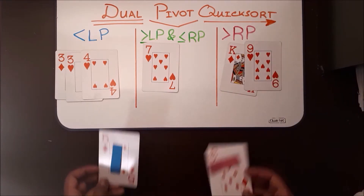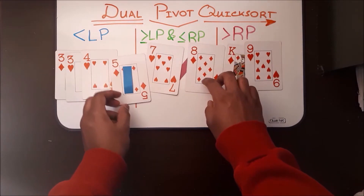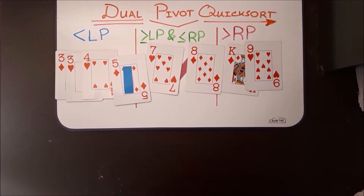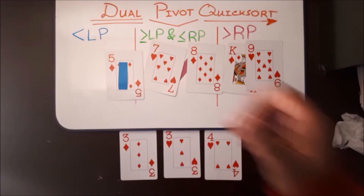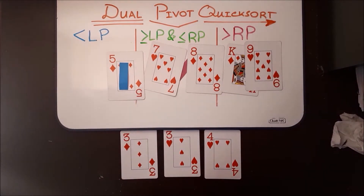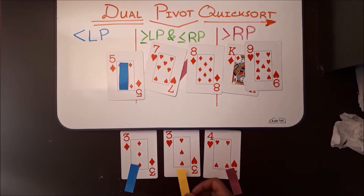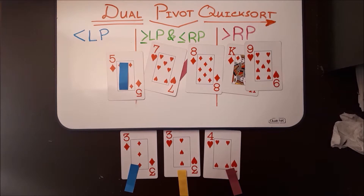Now that we've got our three different subarrays, we're gonna have to use Dual Pivot Quicksort again to sort within these subarrays. We're gonna start by sorting our less than left pivot subarray. Let's find our left pivot and our right pivot. In this case, our left pivot would be three and our right pivot would be four. Three is greater than our left pivot but less than our right pivot, so it's gonna stay in the middle. Our subarray is already sorted for us.